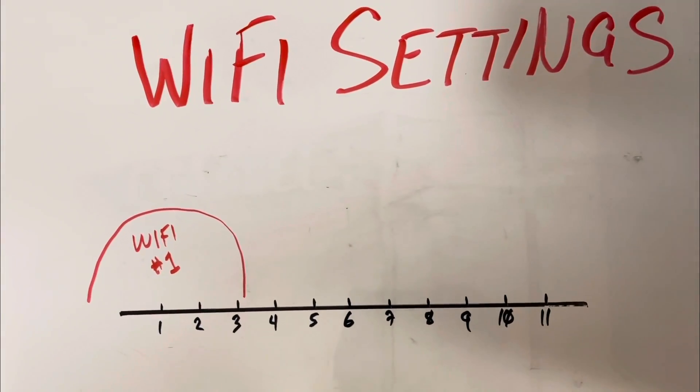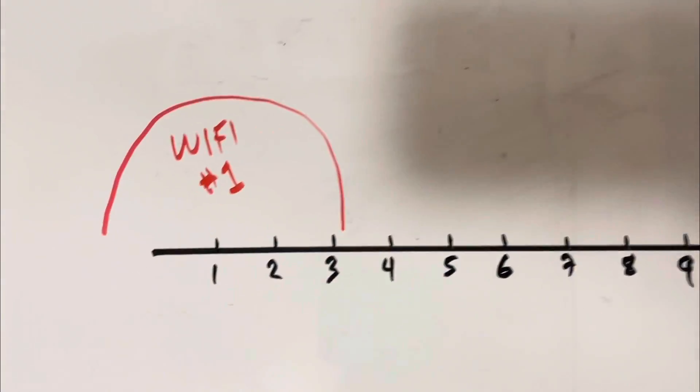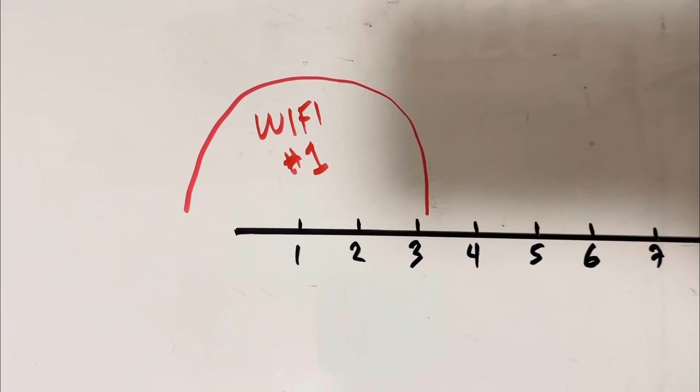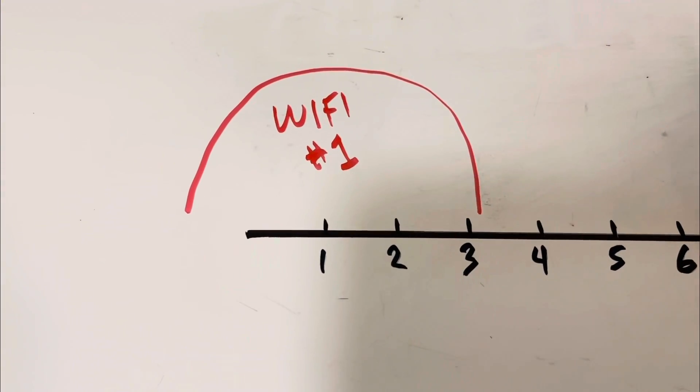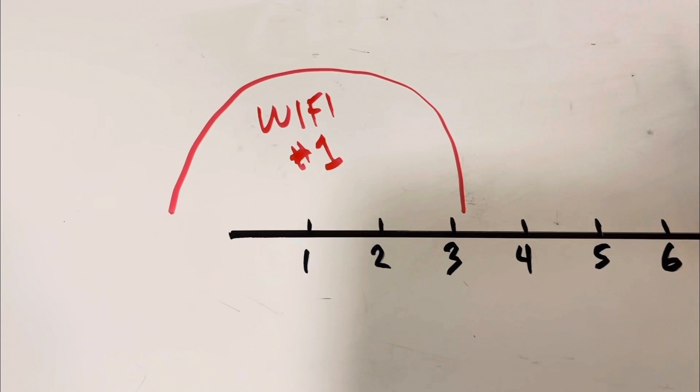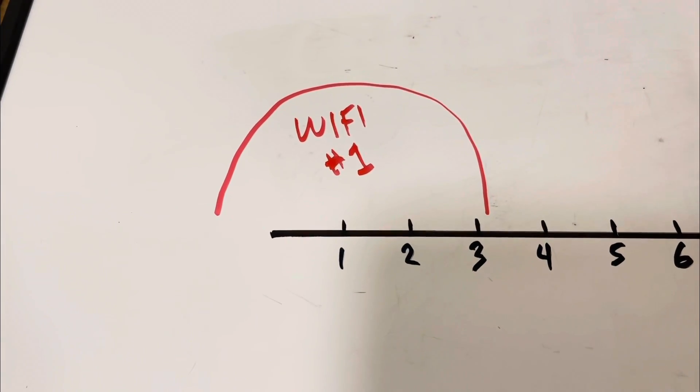If you turn on one Wi-Fi router, it's going to take up this much space on the graph. So for example, if this one is set to channel 1, it's going to take up two channels to the right and two channels to the left. And that's the bandwidth of the channel.